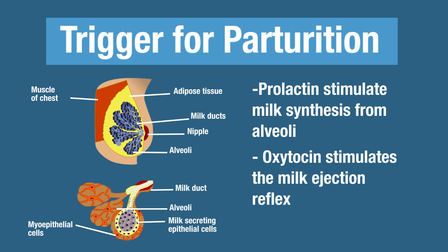The alveoli shown here is a zoomed-in version of the alveoli — they look a lot like the alveoli in the lungs. Prolactin actually stimulates milk synthesis from the alveoli. You have these secretory cells that secrete milk, so you end up with milk in the lumen here.